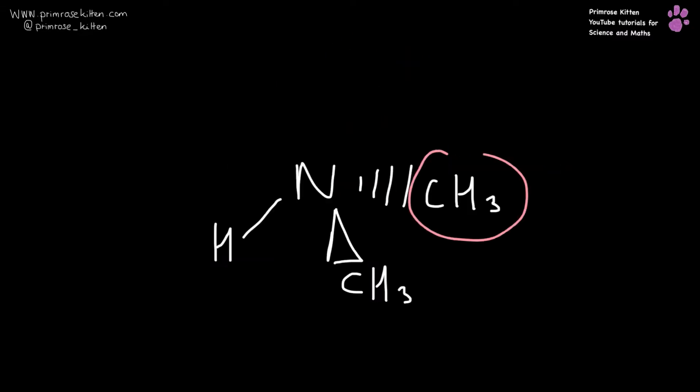If we have replaced two, our amine goes at the end. This is a methyl group. This is a methyl group. There are two of them, so it is dimethylamine.